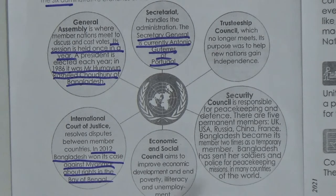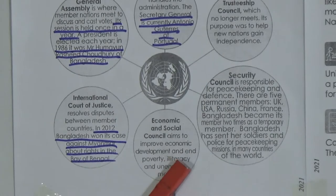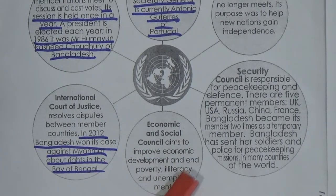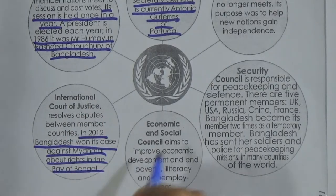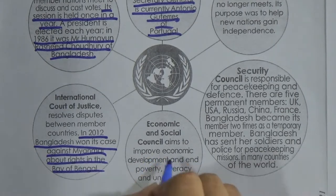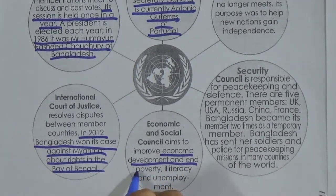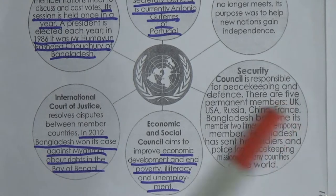The Economic and Social Council aims to improve economic development and end poverty, illiteracy, and unemployment. This council works to develop the economy of different countries and reduce poverty, illiteracy, and unemployment rates around the world.